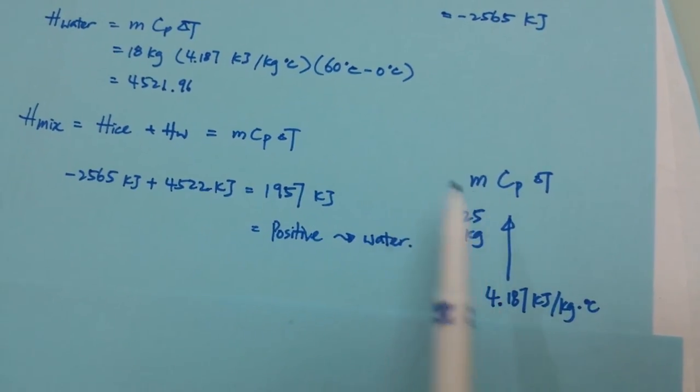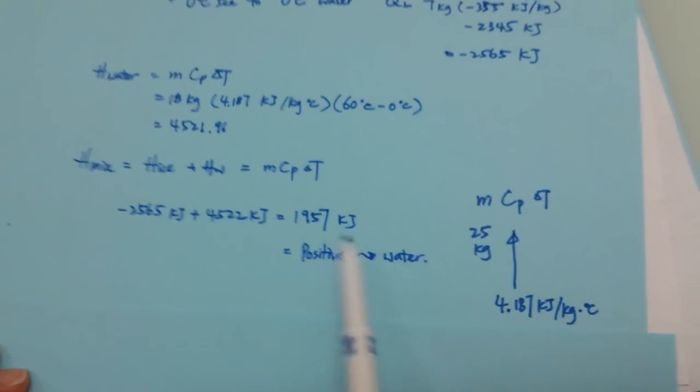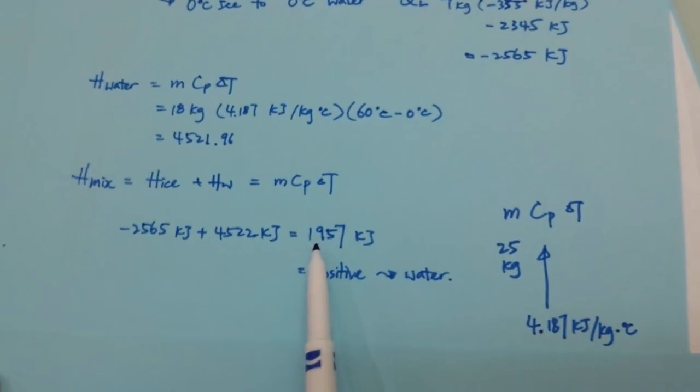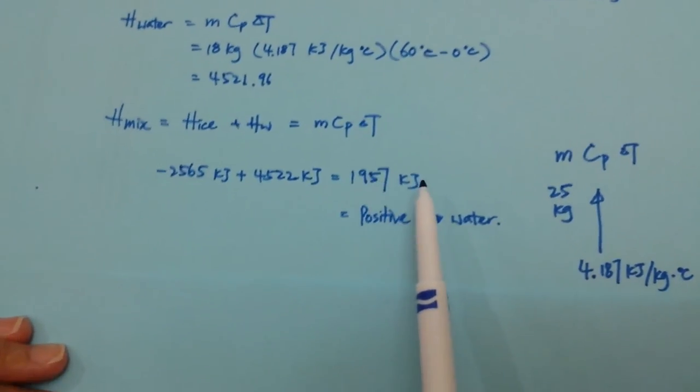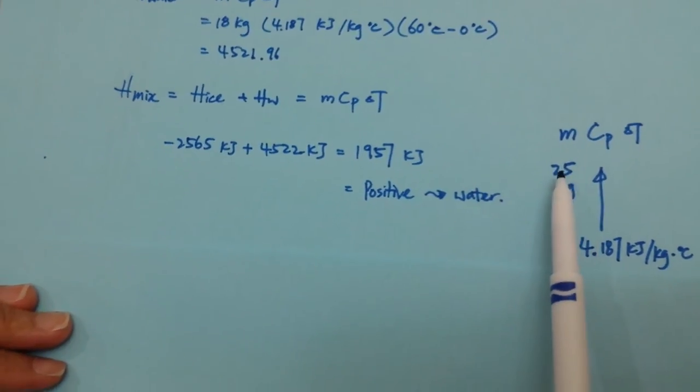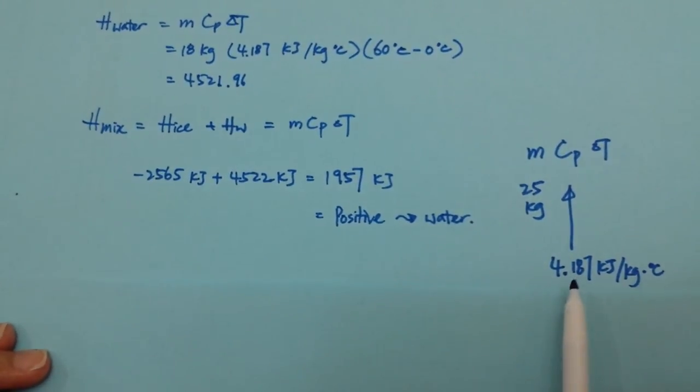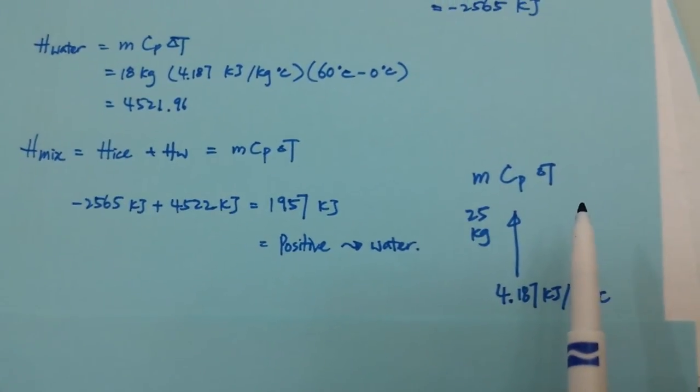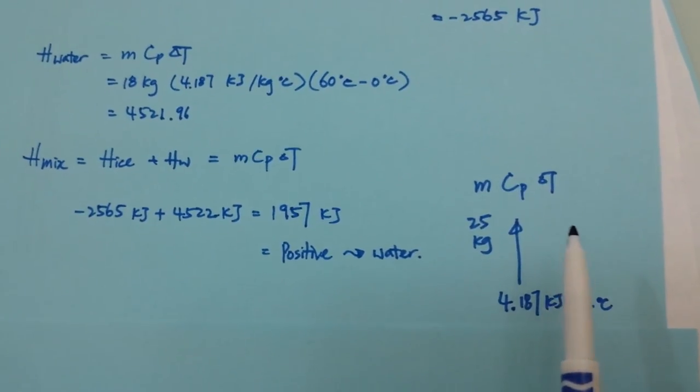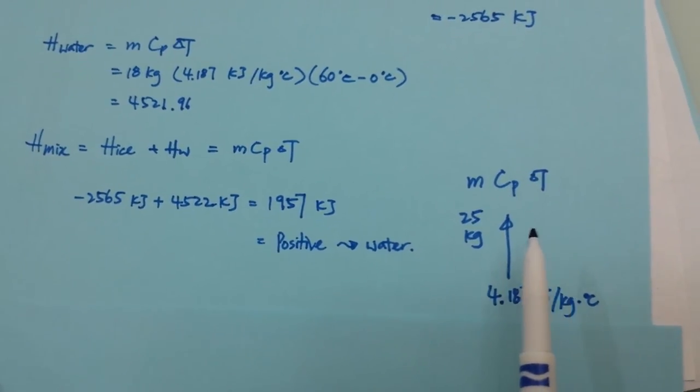Now, looking at all these numbers together, we will have an equation that is roughly 1,957 kilojoules equals to 25 kilograms times this. And by doing some algebra, we will be able to find the temperature of the final mixture.